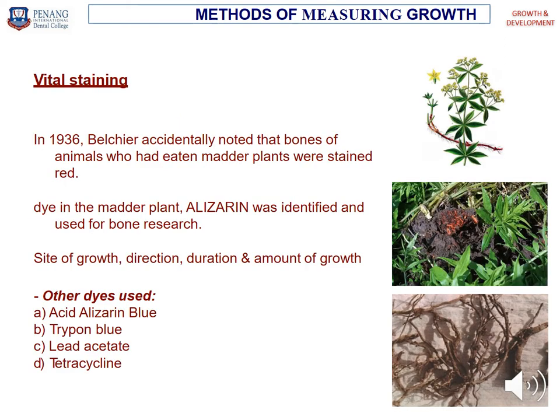What is vital staining? In 1936, Belcher accidentally noted that the bones of animals that had eaten madder plants were stained red. There is a dye in the madder plant called alizarin, used for bone research. It is used to determine the size, direction, duration, and amount of growth. Besides alizarin, other dyes used to measure growth include acid alizarin blue, trypan blue, lead acetate, and tetracycline.